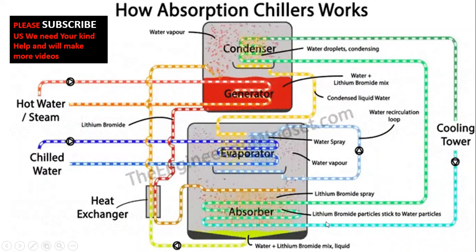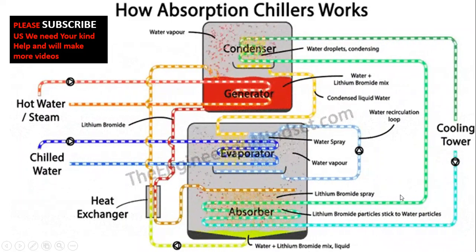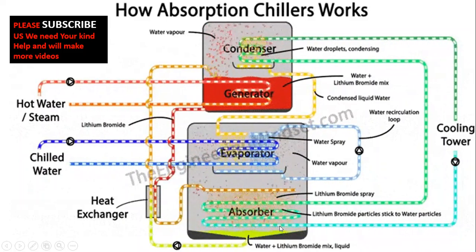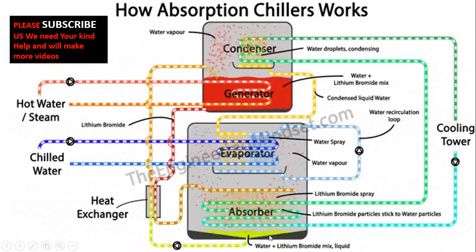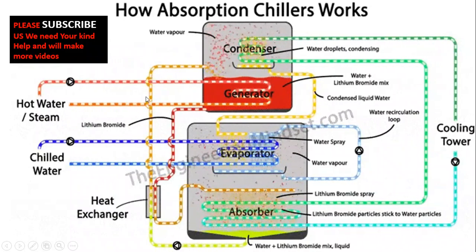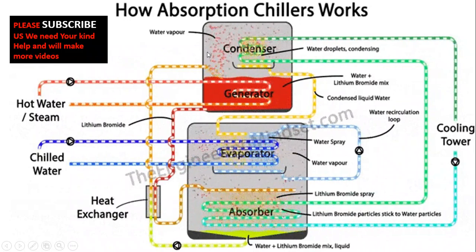A cooling coil from the cooling tower is present in the absorber. The water and lithium bromide mixture condenses back into liquid form due to this cooling. This combined solution is then pumped back to the generator, completing the full cycle of the absorption chiller.